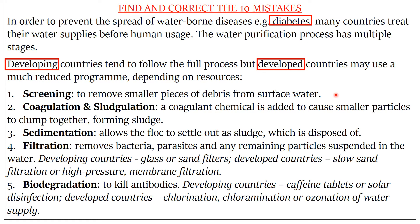Number one: screening to remove smaller pieces of debris from surface water — that should be 'larger'. Number two: coagulation and 'sludgelation' — that word is all wrong — that should be 'flocculation'. A coagulant chemical is added to cause small particles to clump together forming 'sludge' — that should be 'floc'.